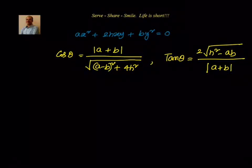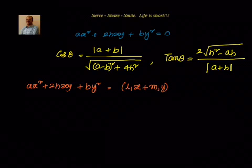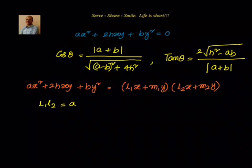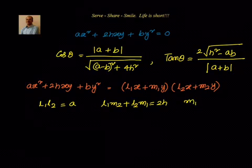To derive this, we say that ax² + 2hxy + by² represents a pair of straight lines. Let those straight lines be l1x + m1y = 0 and l2x + m2y = 0. Comparing coefficients, we get: l1·l2 = a, l1·m2 + l2·m1 = 2h, and m1·m2 = b.